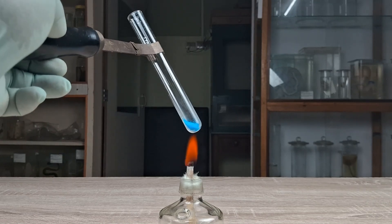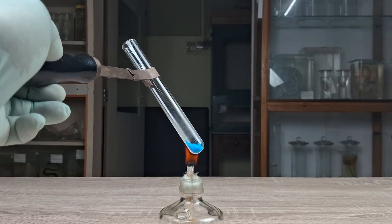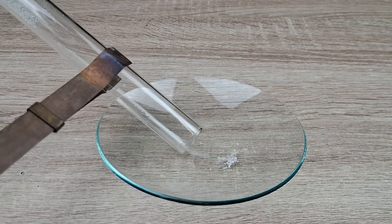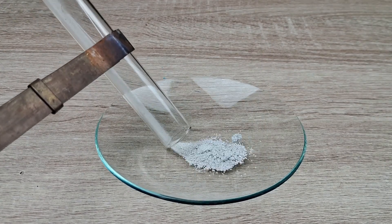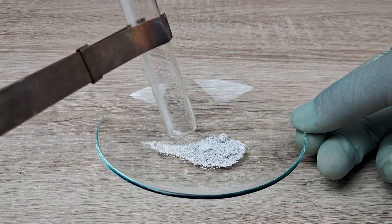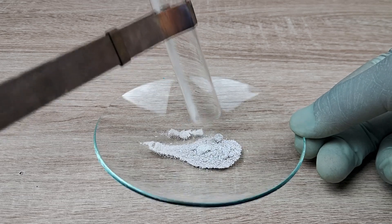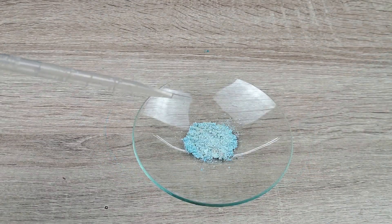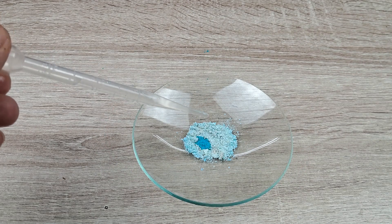Now stop heating the tube and quickly transfer its contents into a watch glass or petri dish. Keep the watch glass in open air for some time and allow the salt to cool. Record your observations. Now add water dropwise to the residue in the watch glass. Record your observations.